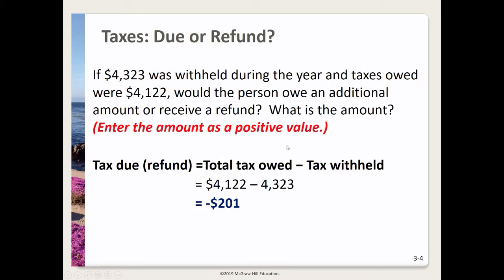The homework says to enter the amount as a positive value, but we have to interpret the scenario. I owe $4,122 in taxes but withheld $4,323, meaning I've withheld more than what I actually owe, so I should expect a refund of $201.